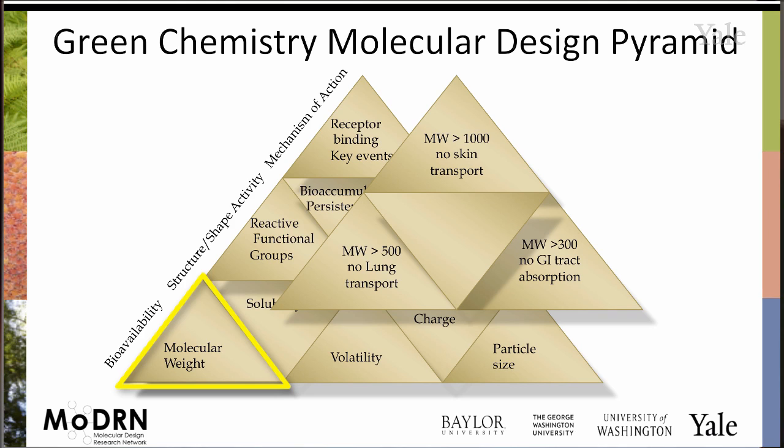So, molecular weight. We know that with a molecular weight of greater than 1,000, you're going to have essentially no skin transport. We know that with a molecular weight of greater than 500, you're going to have essentially no lung transport. It gets into your lungs and can't transport across your lung. And with a molecular weight of greater than 300, you're going to have essentially no GI tract transport. So that's really important because from where we started, no ability to get into your body, no ability to cause adverse consequence.